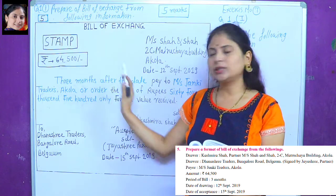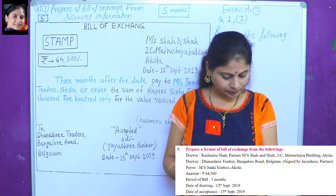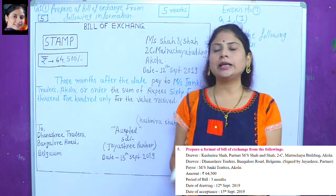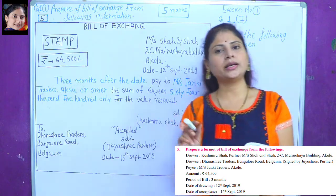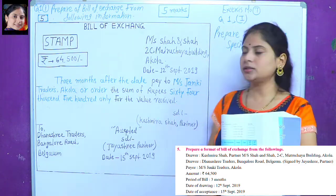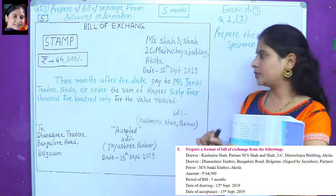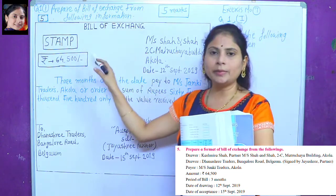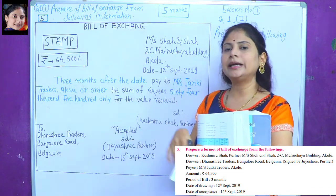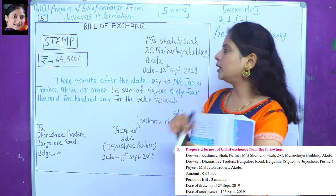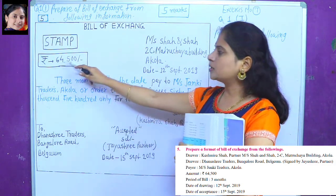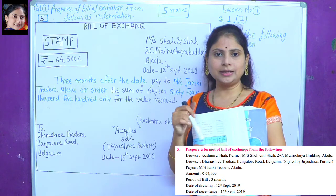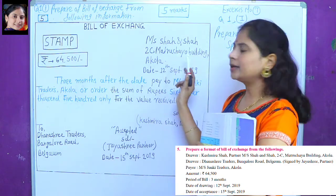The amount of the bill is drawn. The date is 15 September 2019. We have to prepare the format. Every bill of exchange will be stamped. The amount is Rs. 64,500. There is a drawer.